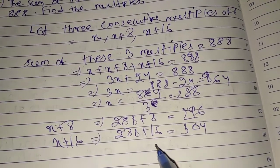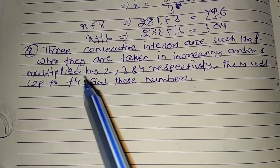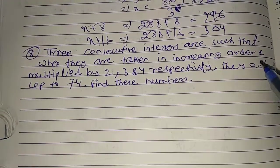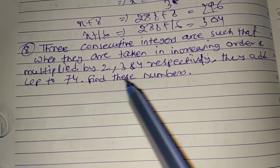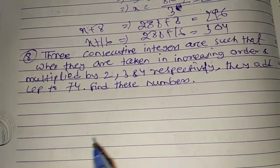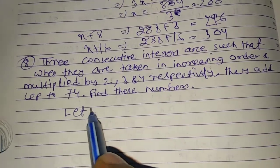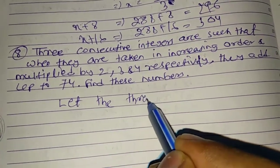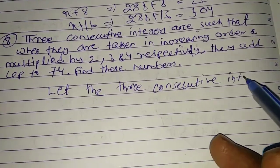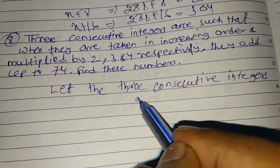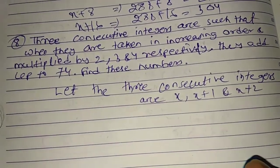Next one: three consecutive integers are such that when they are taken in increasing order and multiplied by 2, 3, 4 respectively, they add up to 74. Find these numbers. So let the three consecutive integers are X, X plus 1, and X plus 2.